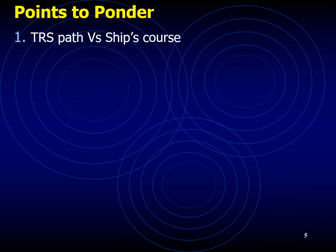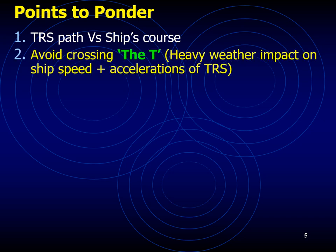Consider the TRS path versus your ship's course. Never plan to cross the track or cross the T of a cyclone, out of respect for the negative effects heavy weather places on vessel speed and handling. Sudden accelerations in hurricane motion can place a vessel in unexpected conditions, resulting in disaster. Adjustments to course and speed to remain clear of the danger area in a hurricane are the most prudent navigation decisions a mariner can make.